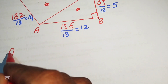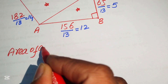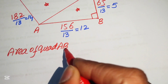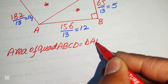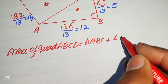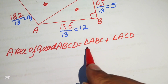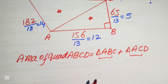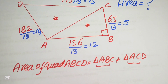Our target is: area of quadrilateral ABCD equals area of right triangle ABC plus area of triangle ACD. We need to find these two areas separately and then add them to get the area of the required quadrilateral.